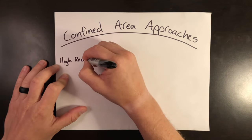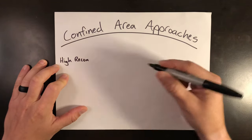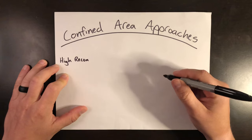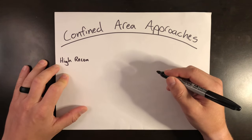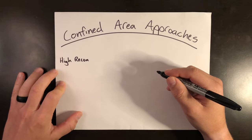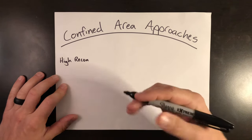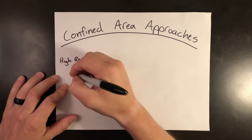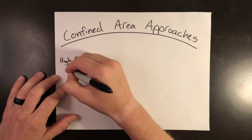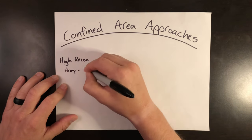Now there are a few different techniques for doing this, but the high area recon generally takes place about 300 to 500 feet above the intended landing area to survey the site. The first one I'll pick out is the Army's reference of SSBATW.